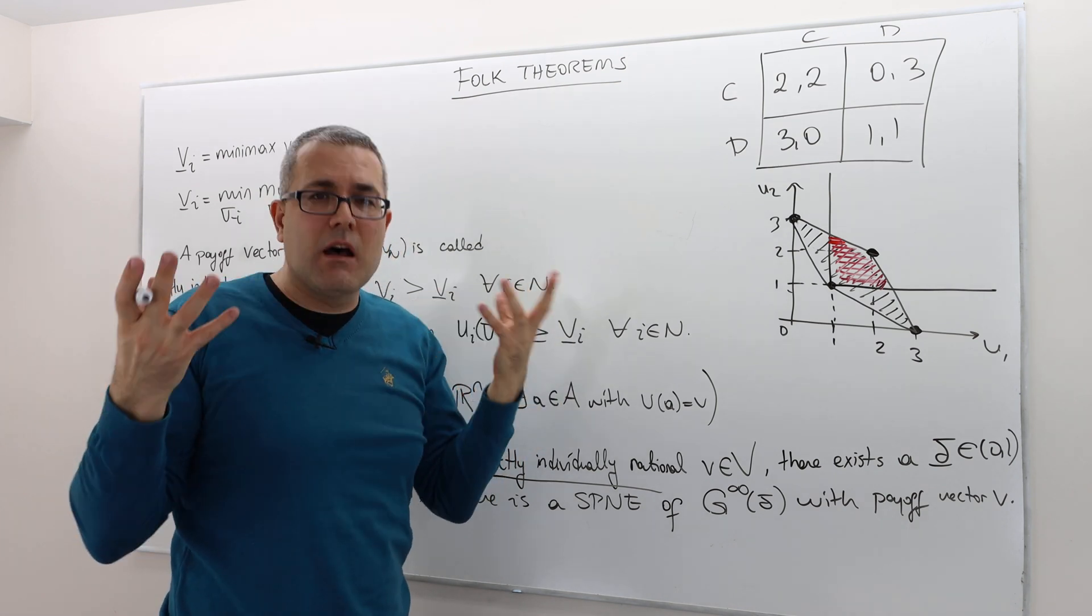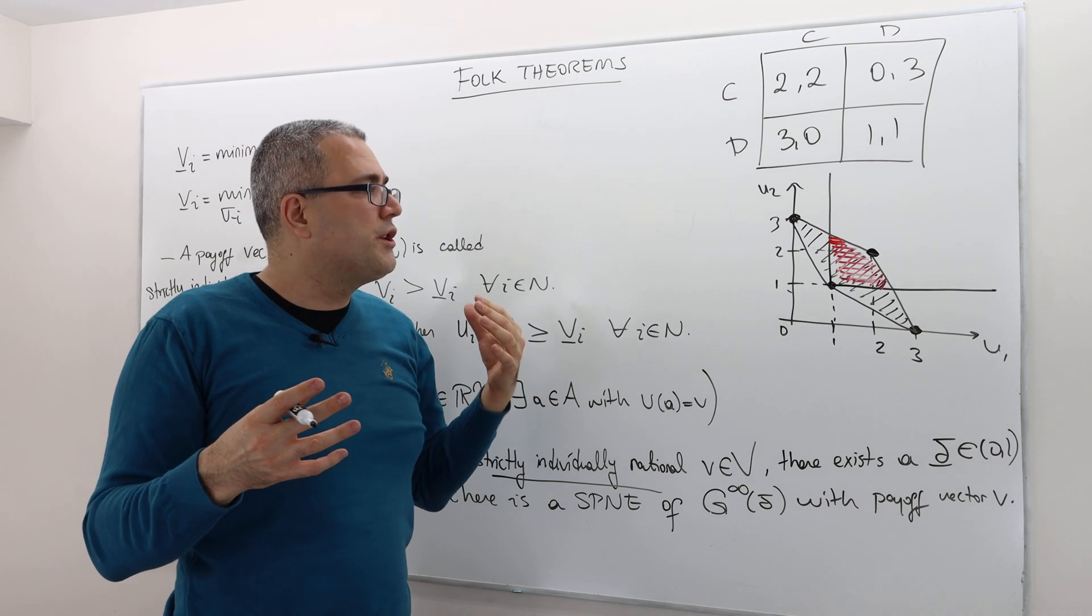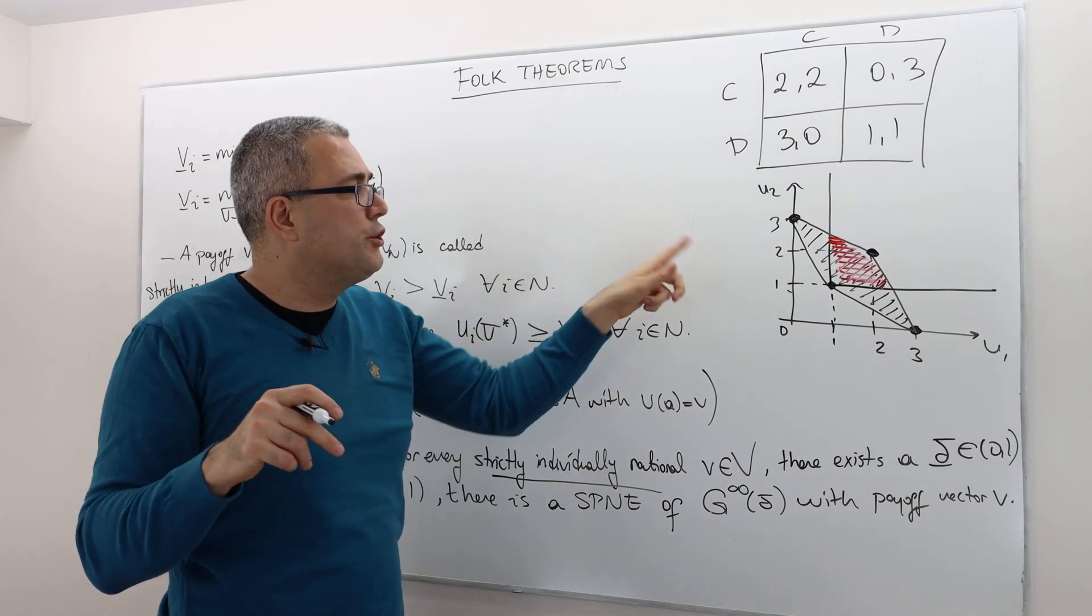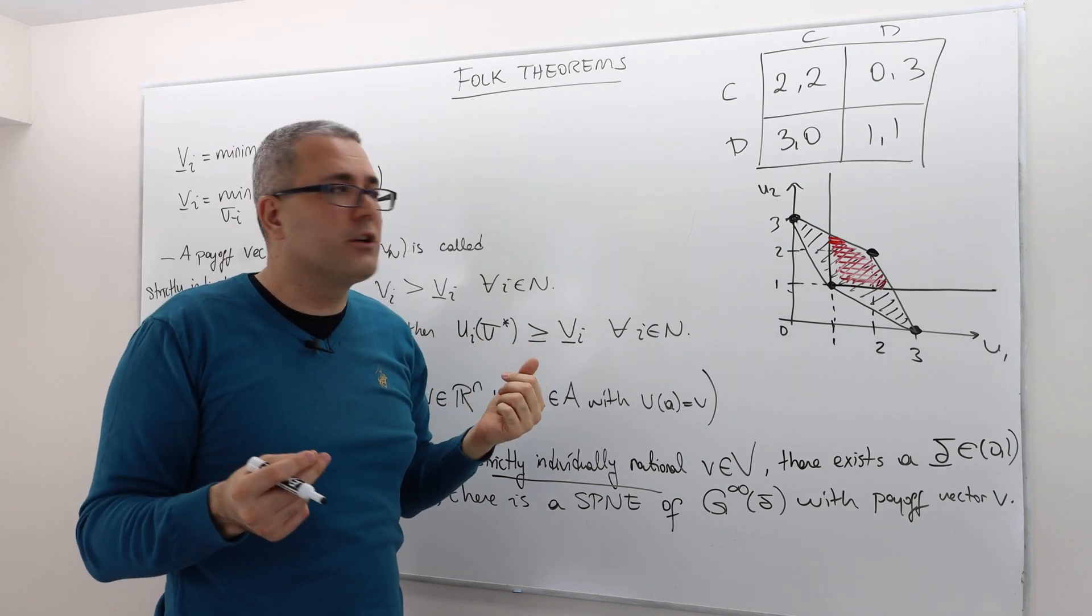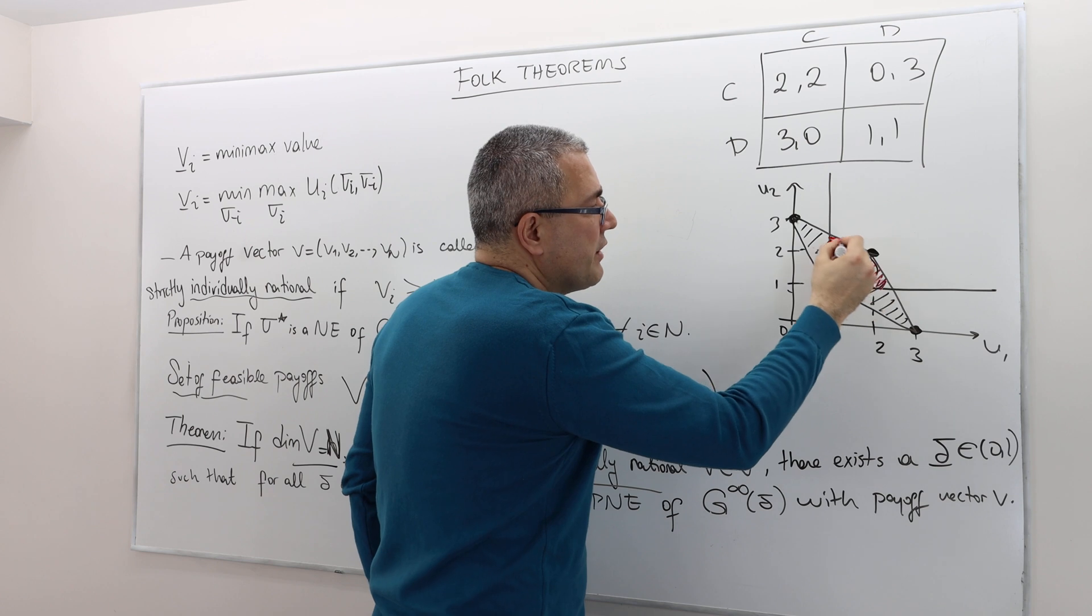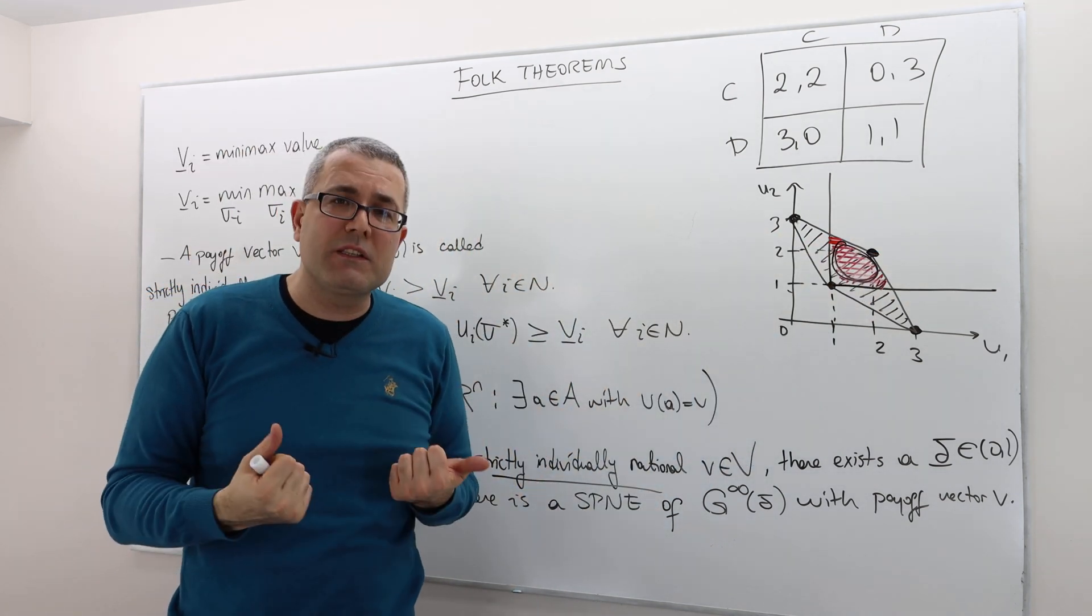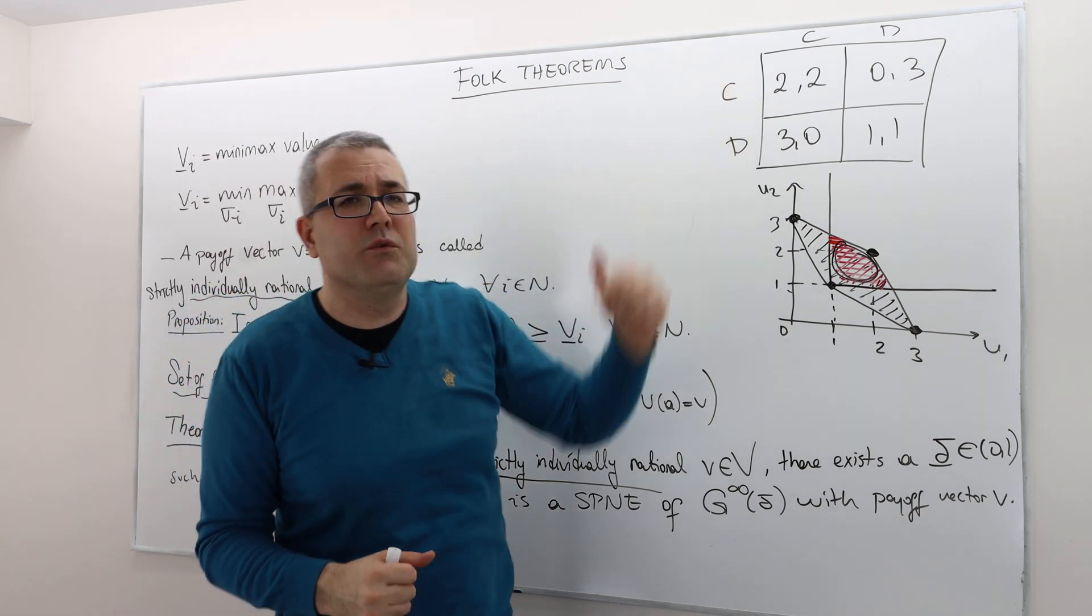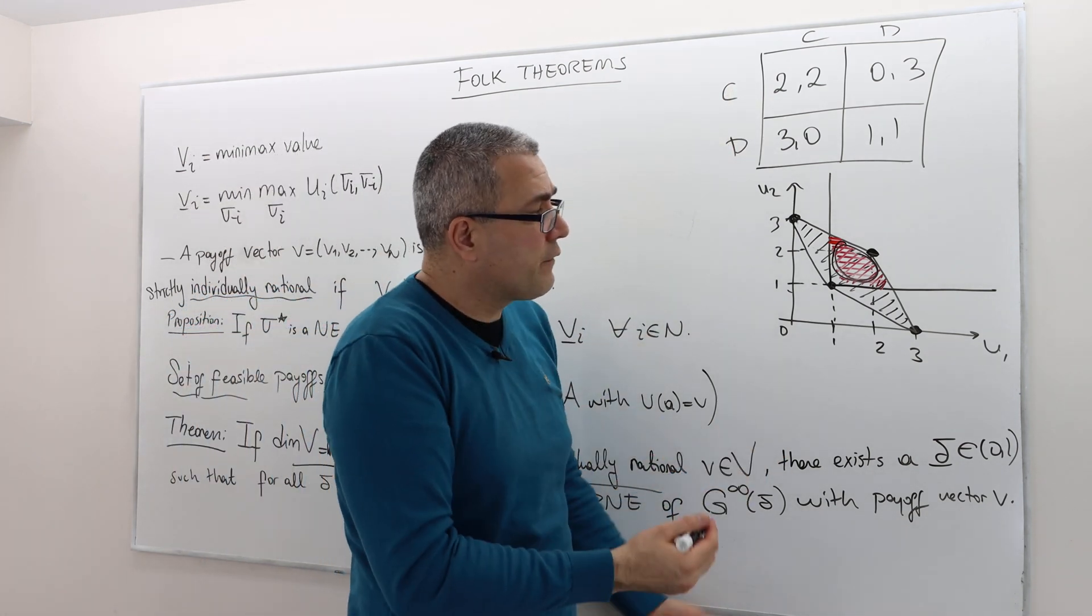So if two players are repeating the prisoner's dilemma forever, well then the payoff 2-2 can be, the average payoff 2-2 can be supported as a subgame perfect Nash equilibrium. What does that mean? That means there exists some strategy profile which gives on average 2-2 payoff and it's subgame perfect Nash equilibrium. But is that it? No.